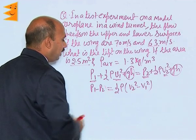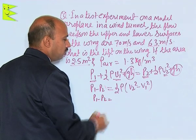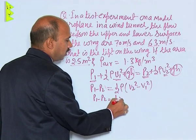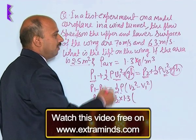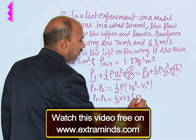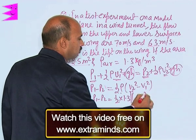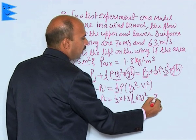We are given here now, P1 minus P2 is equal to half, rho is the density, here we are given 1.3 into V2, we are given here 63. So, we can write here 63 square minus and that is your 70 square.